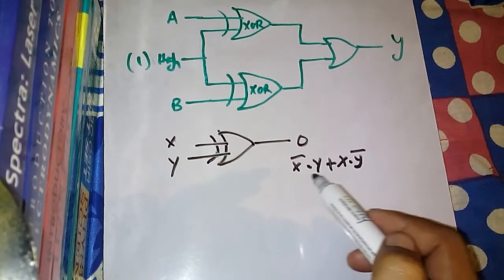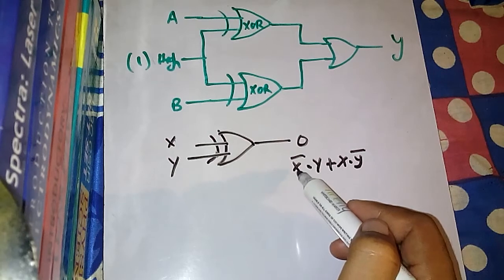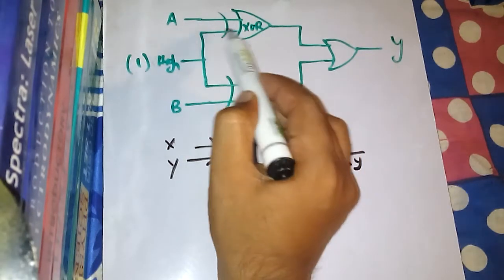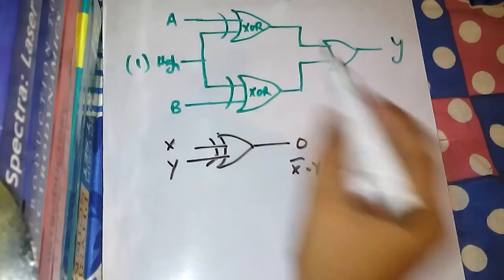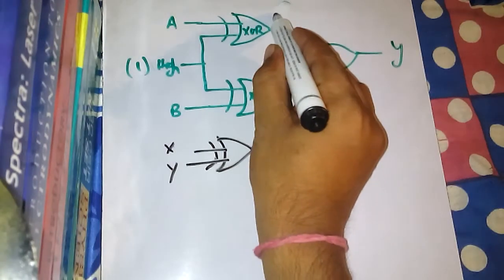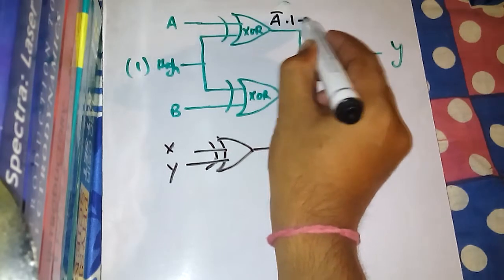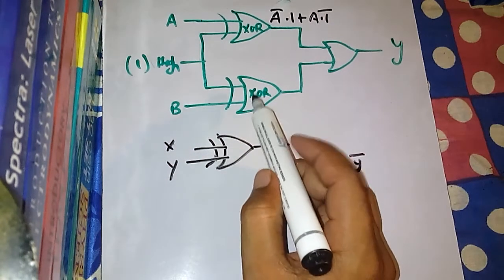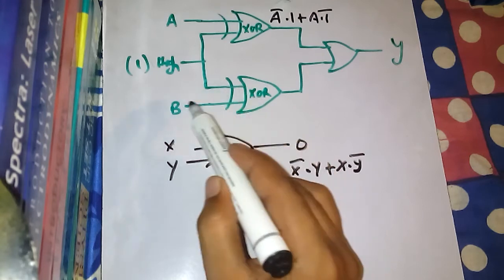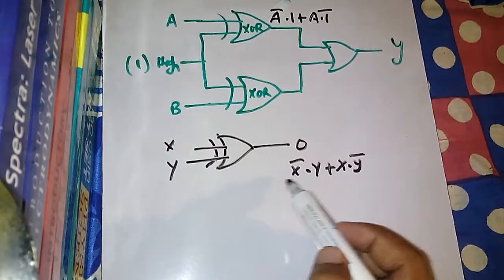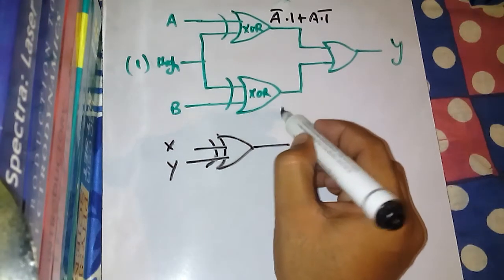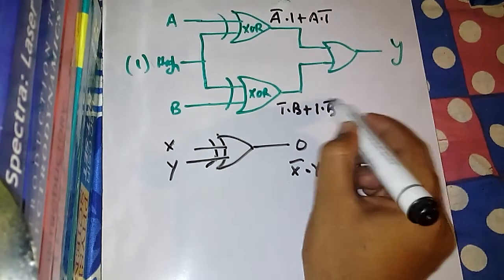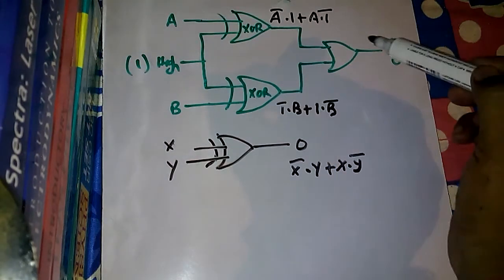When the inputs are X and Y, the output of an XOR gate is X bar dot Y plus X dot Y bar. So for this XOR gate where the inputs are A and one, the output would be A bar dot one plus A dot one bar. For the second XOR gate where one input is one and the other is B, the output is one bar dot B plus one dot B bar.